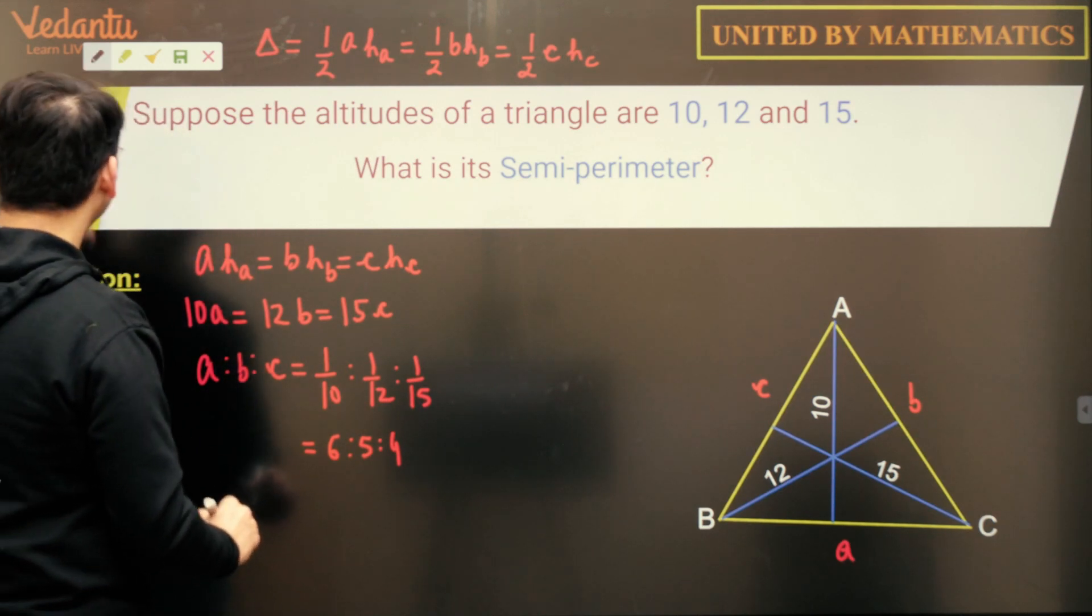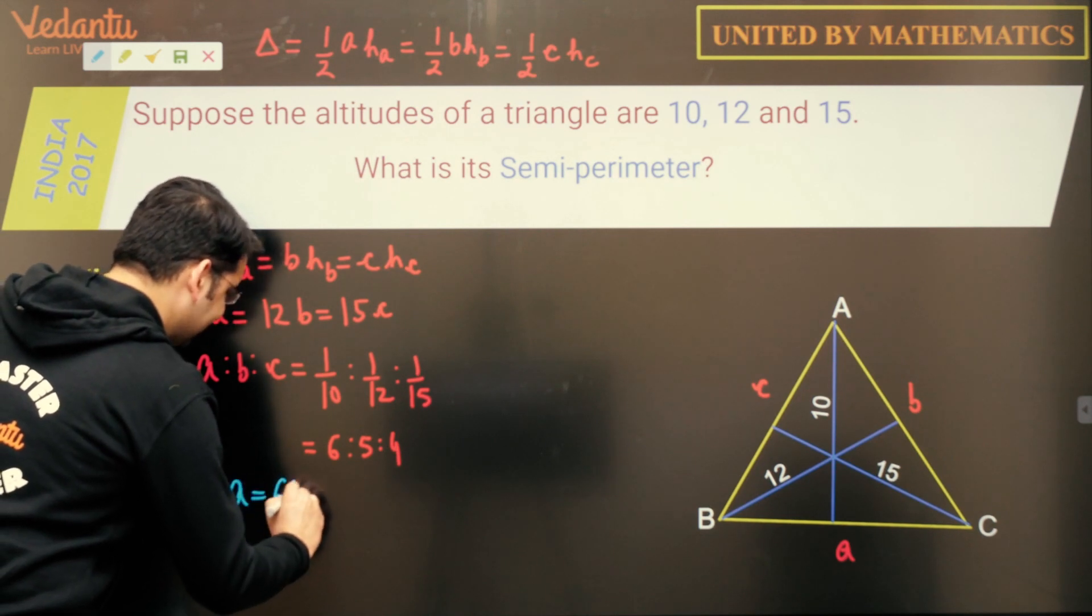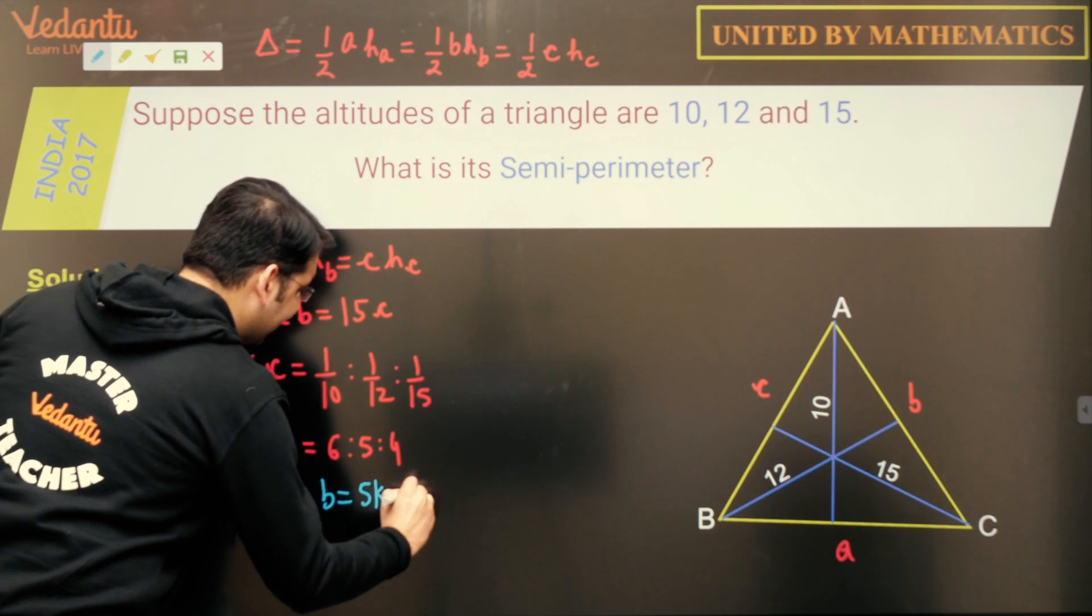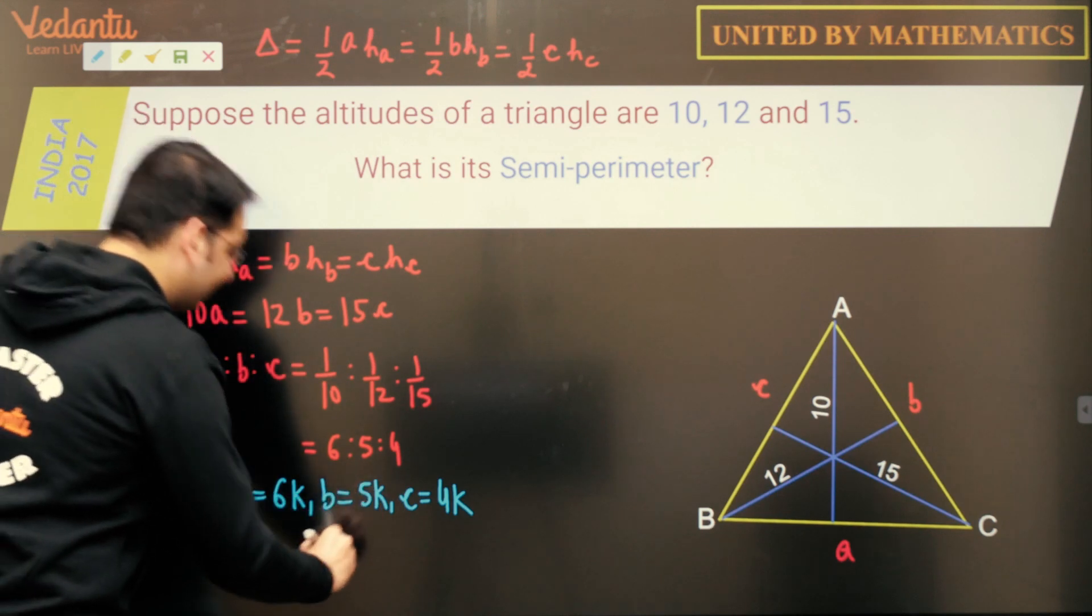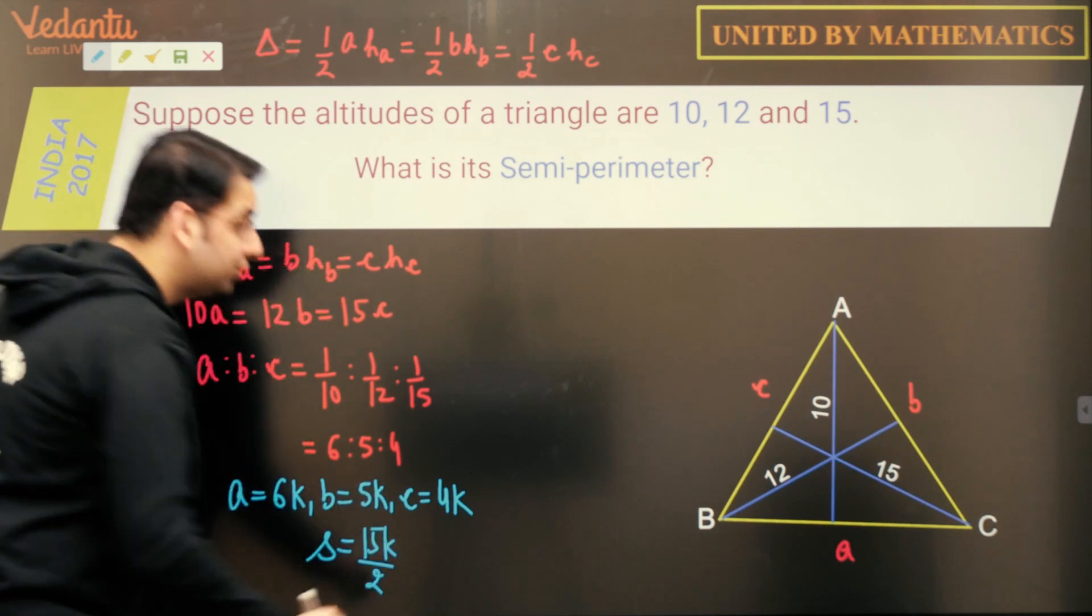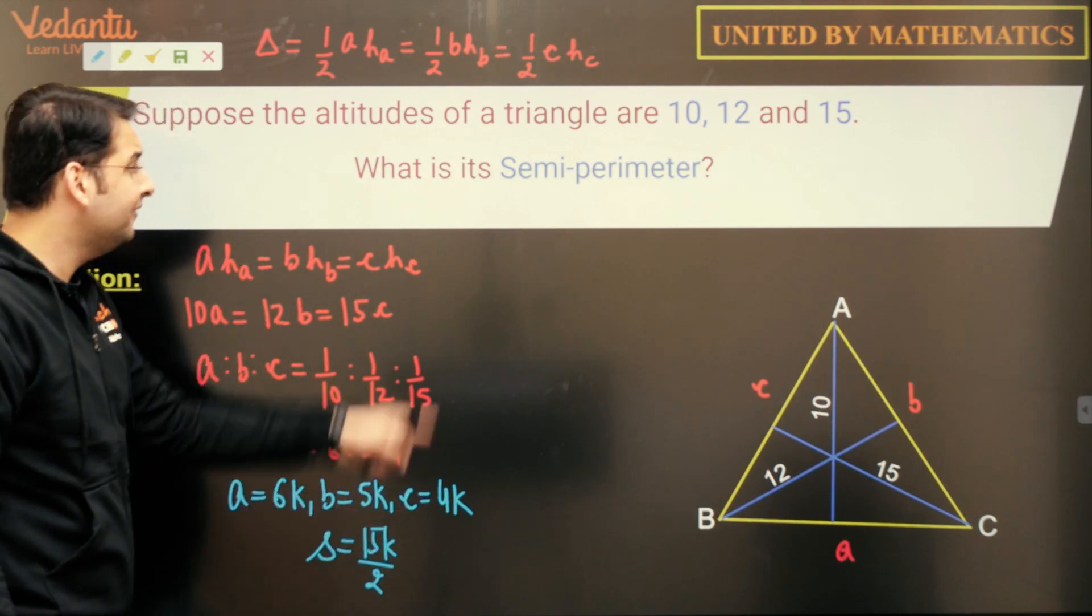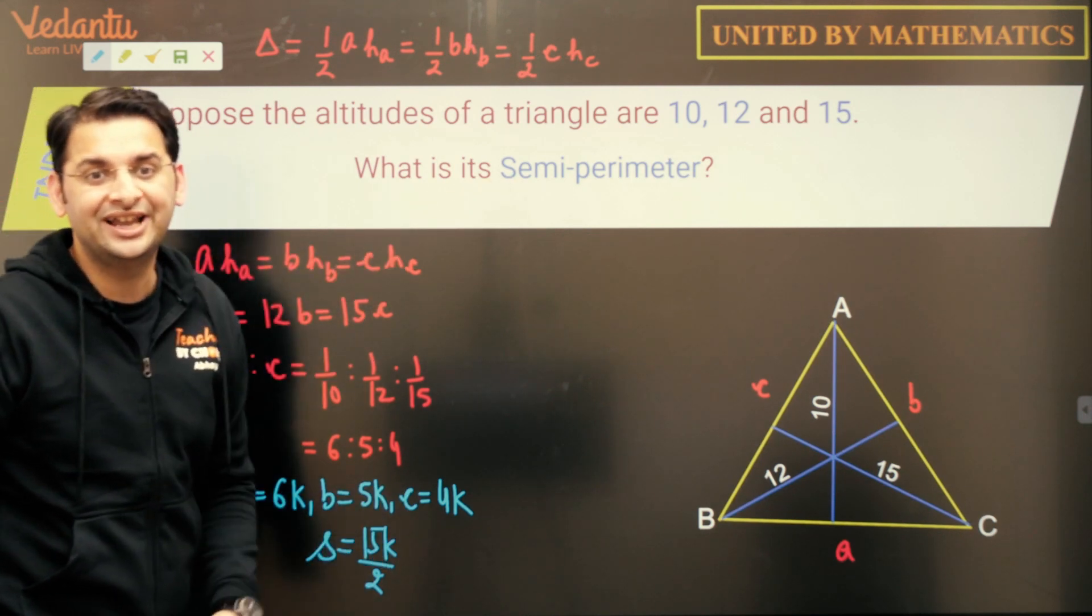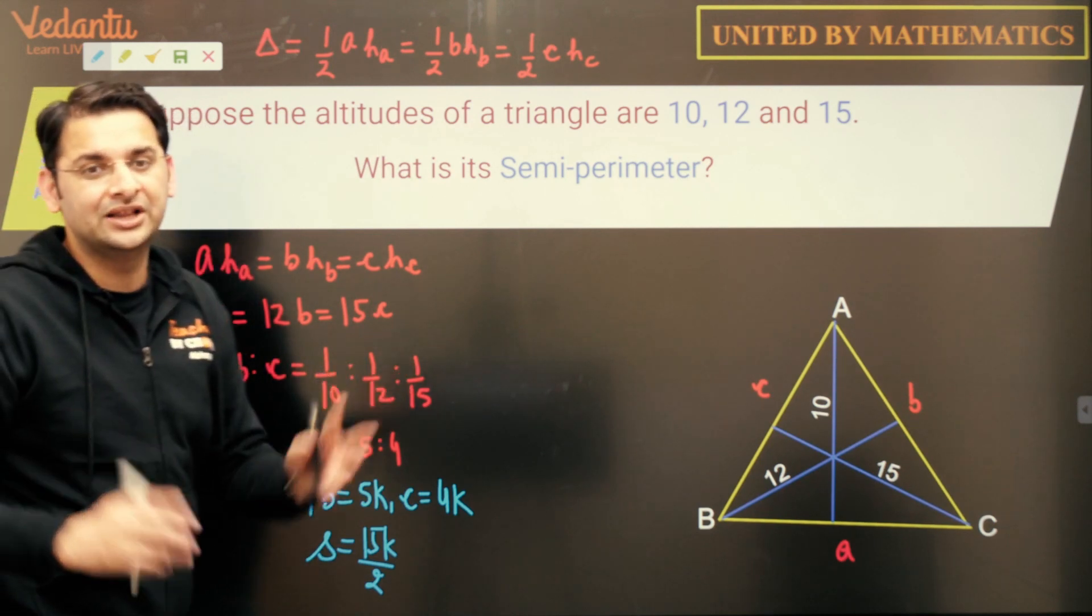We have the ratio of the sides now and let us assume the sides A as 6K and B as 5K and C as 4K. And in this case, the semi-perimeter would be 15K upon 2. My job now is to find the value of K. So if I find the value of K, we are done. All I need to find is the value of K and how do I find the value of K?